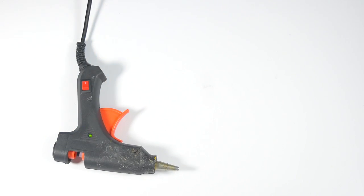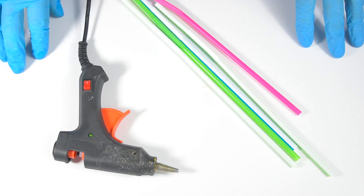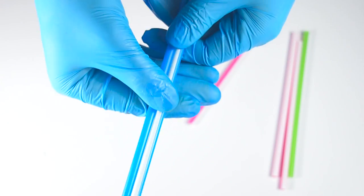For this one, we will need a glue gun and about six straws. And we'll be making a cell phone stand. First, bend two straws in half.